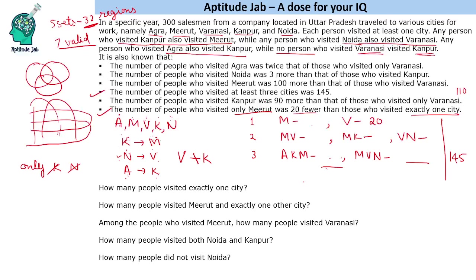Kanpur appears in two combinations: Meerut-Kanpur and Agra-Kanpur-Meerut. The number of people who visited Noida was three more than those who visited Kanpur — Kanpur is 110, so Noida is 113. The number of people who visited Agra was twice those who visited only Varanasi — only Varanasi is 20, so Agra is 40.